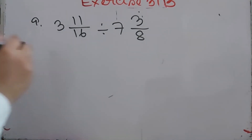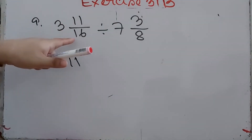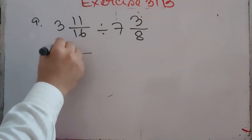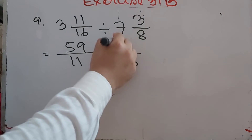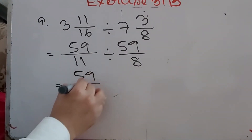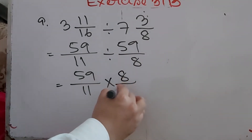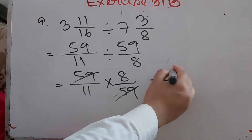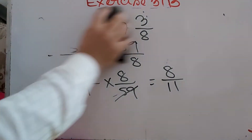Number 9: 3 whole 11/16 divided by 7 whole 3/8. Convert: 16×3 = 48 plus 11 = 59/16, and 8×7 = 56 plus 3 = 59/8. Multiply 59/16 by the reciprocal 8/59. Dividing 59 by 59 gives 1, so the answer is 8/16... correcting: 8/11. The answer is 8/11.